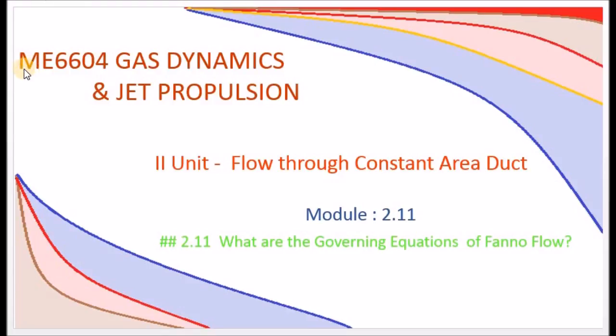Hi students, in ME 6604 Gas Dynamics and Jet Propulsion, this is the second unit, Flow Through Constant Area Ducts. This is module 2.11.